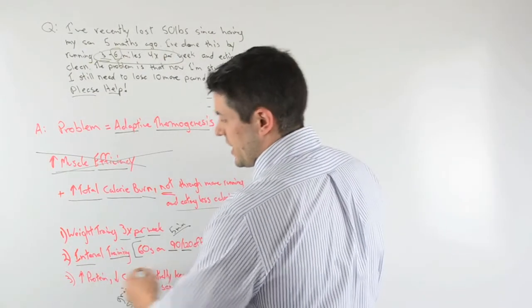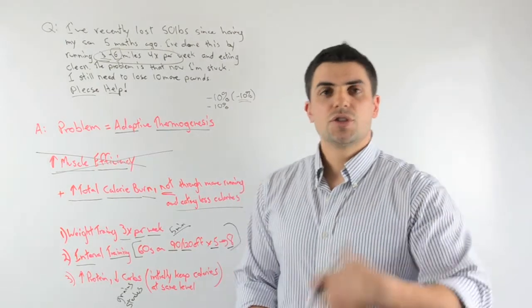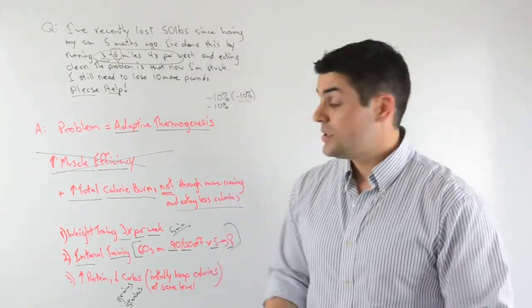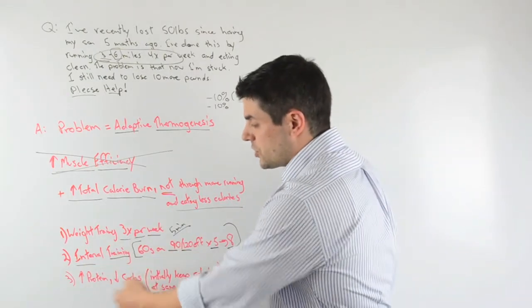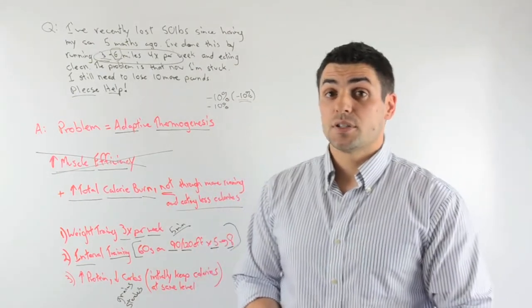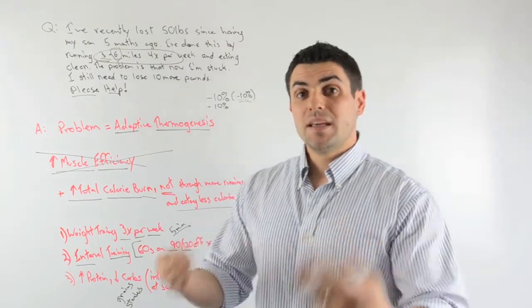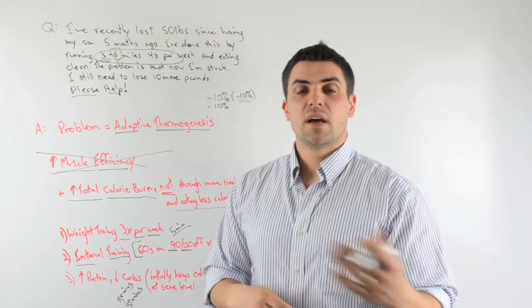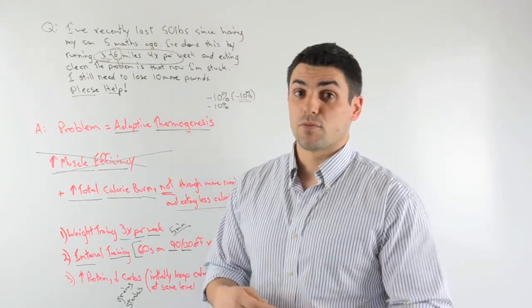So after you make this dietary change and you make these other exercise changes, you should see your weight loss jumpstart again. And then after a while, if it slows down, you can either add another interval training session or we can start to look at slowly reducing calories by 250 calories per day. But no more than that. We want to do as much as we can to increase your calorie burning to make that deficit between calories in versus calories out instead of getting that deficit from reducing calories.